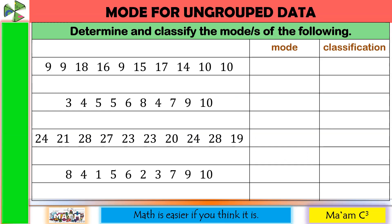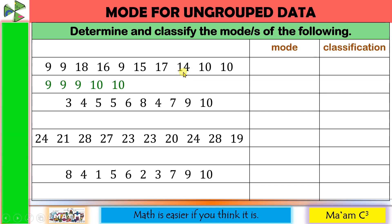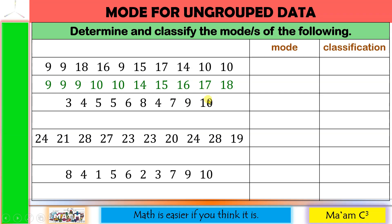Example 1 for mode: arrange the data in ascending order to group identical values. After arranging: 9, 9, 9, 10, 10, 14, 15, 16, 17, 18. Counting frequencies — 9 appears 3 times, 10 appears 2 times, and all others appear once. The number that appears the most is 9. So the mode is 9, and since only one number appears the most, this is unimodal.